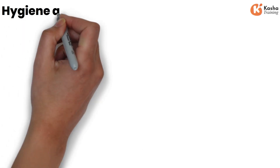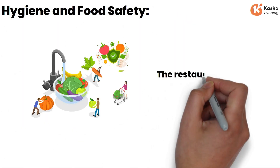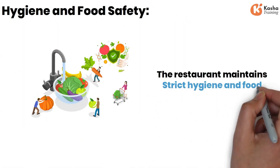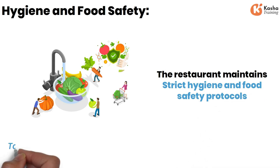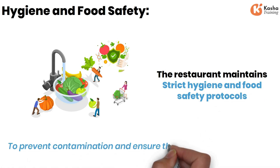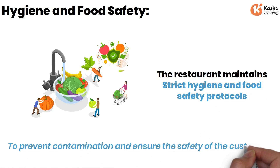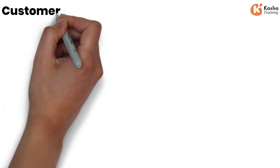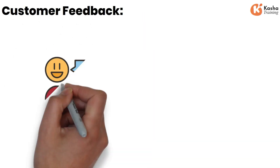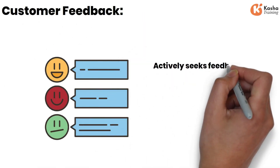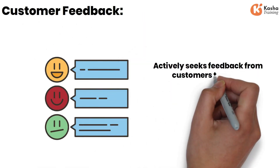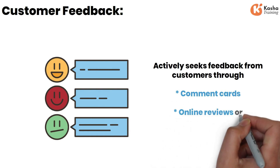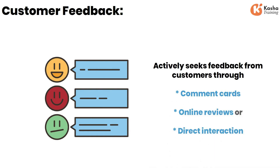Hygiene and Food Safety: the restaurant maintains strict hygiene and food safety protocols to prevent contamination and ensure the safety of the customers. Customer Feedback: the restaurant actively seeks feedback from customers through comment cards, online reviews, or direct interaction. This feedback is carefully reviewed and used to identify areas for improvement.